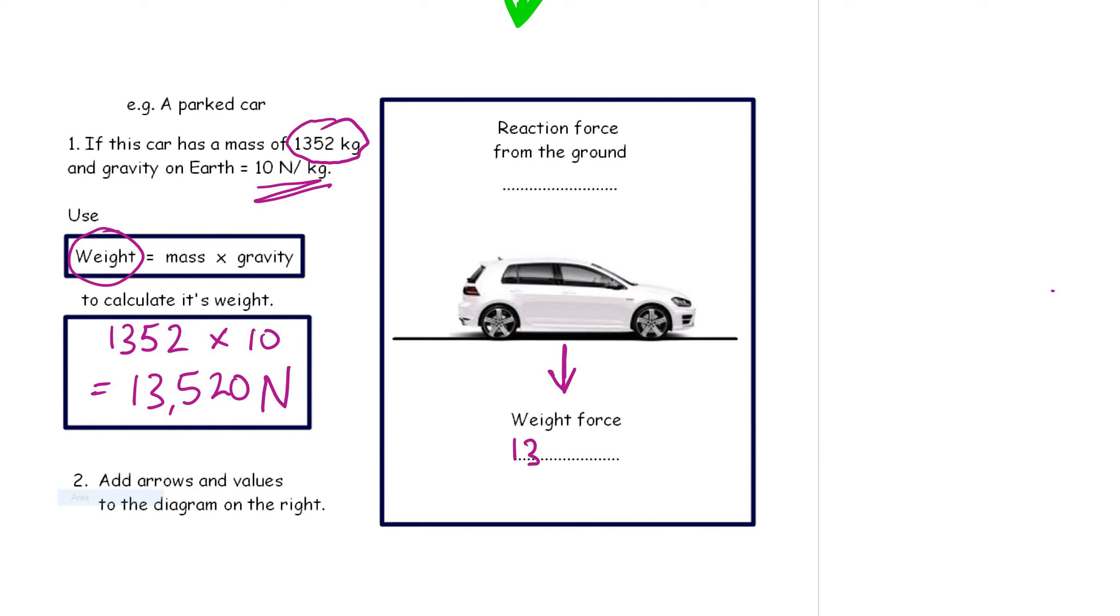So 13,520 newtons downwards. If the car is parked, its not moving, so the forces must be balanced. They're equal but opposite. So the weight force is balanced by the reaction force from the ground and the forces are balanced. They're equal but opposite. And if that's the case, the car stays still.